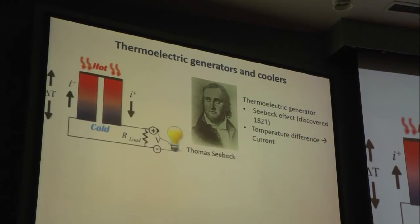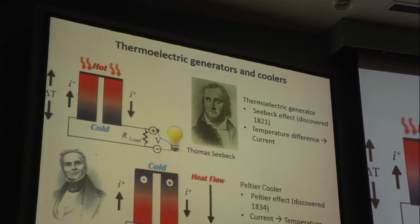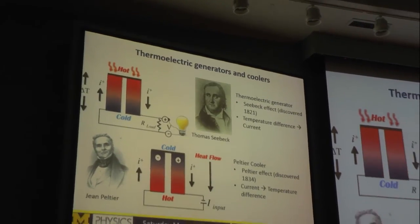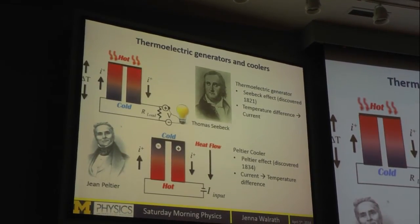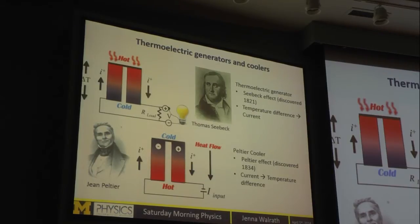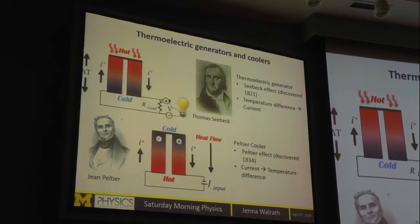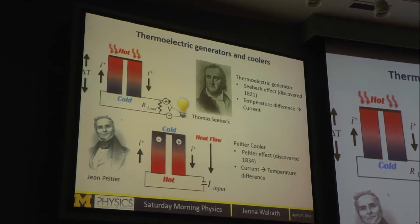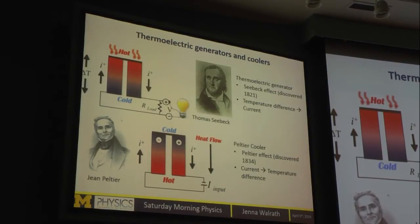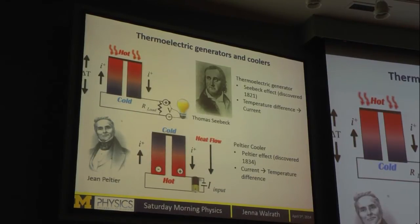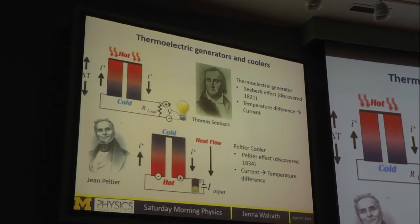I can also do the opposite — make a Peltier cooler. This little trick was discovered by Jean Peltier. I can apply a current and get a temperature difference, making a cooler that rejects heat from the system. Instead of applying a temperature gradient, I put a battery in and force the current to flow so I can reject heat from my system.